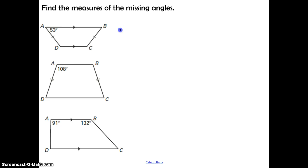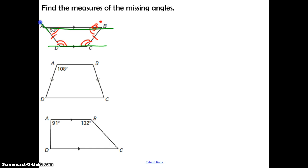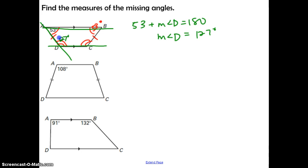Here we're going to find the measures of the missing angles. For the first one, the legs are congruent, so these are isosceles trapezoids, meaning the base angles are congruent. So the measure of angle B is 53 degrees. Then angle D and angle C are going to be the same. Focusing on the parallel lines cut by a transversal, 53 degrees and angle D are consecutive interior angles, which are supplementary. So 53 plus the measure of angle D equals 180, giving us the measure of angle D equal to 127 degrees — same for angle C.